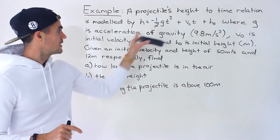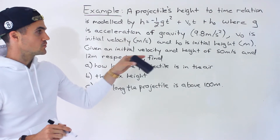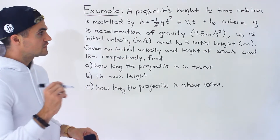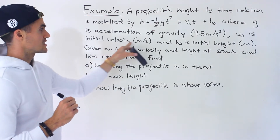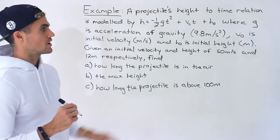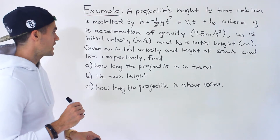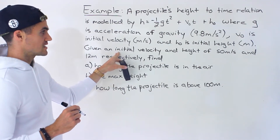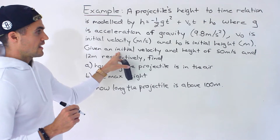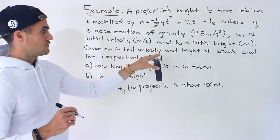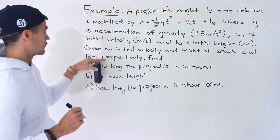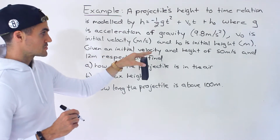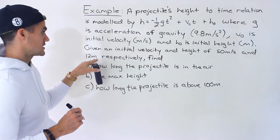Where g is the acceleration of gravity, which in this case is 9.8 meters per second squared. v naught is the initial velocity in meters per second, and h naught is the initial height. We're given that the initial velocity is 50 meters per second and the initial height is 12 meters.